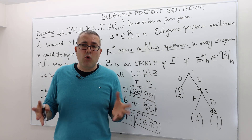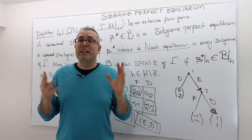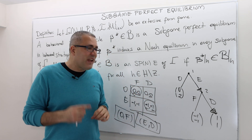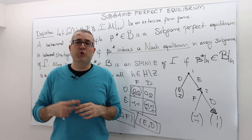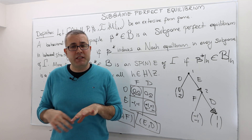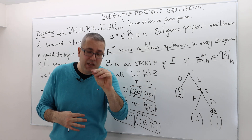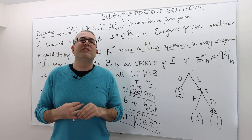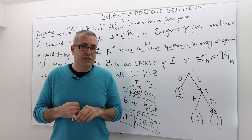Nevertheless, every finite game has at least one subgame perfect Nash equilibrium — maybe in pure strategies, maybe in mixed or behavioral strategies.